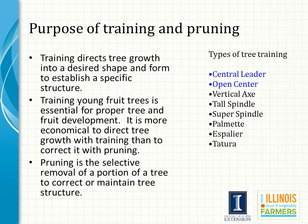Training and pruning are two different aspects of modifying the natural growth patterns of a fruit tree. Training focuses on tree development, whereas pruning is used to maintain tree function and size. Training takes place usually in the first 4 to 5 years of the tree's life, whereas pruning is done throughout the life of the tree. The central leader and open center are the most common training systems in Illinois in low-density orchards.